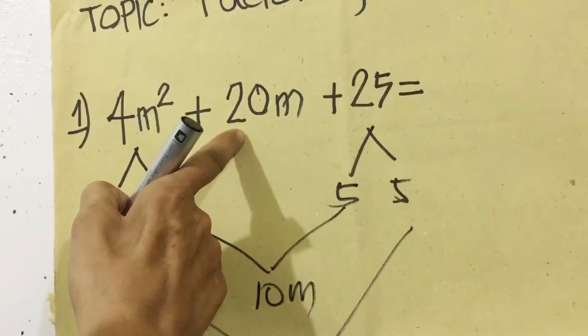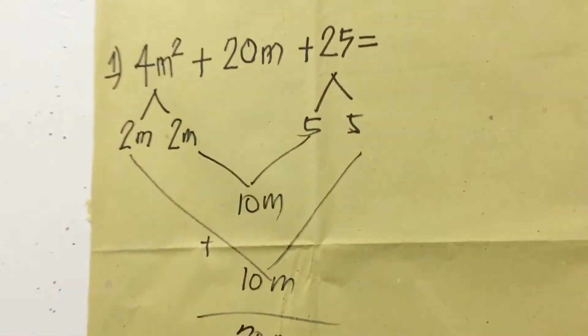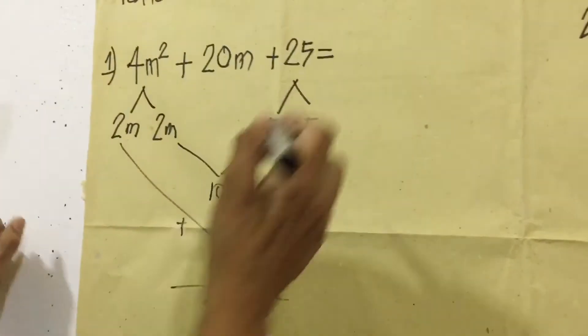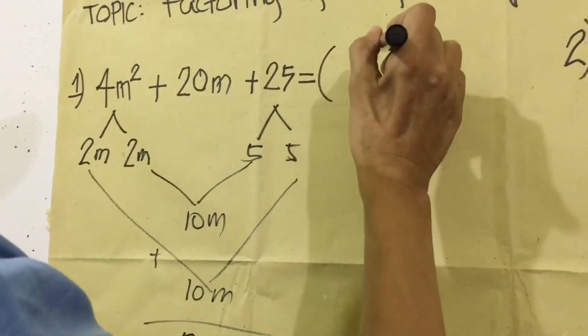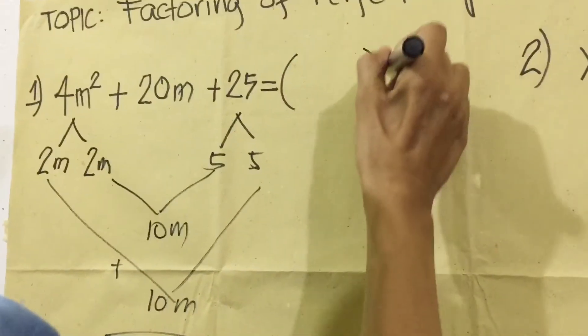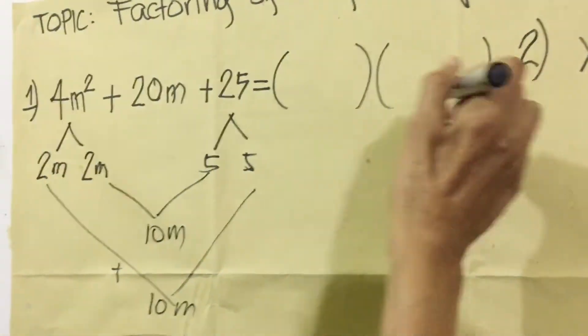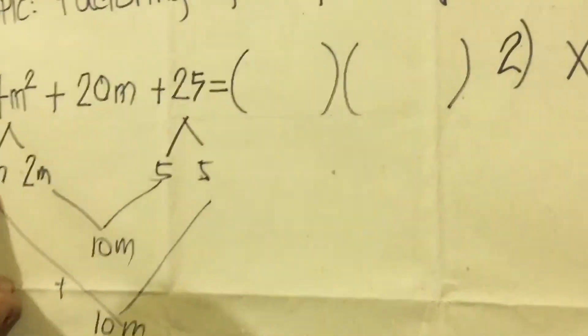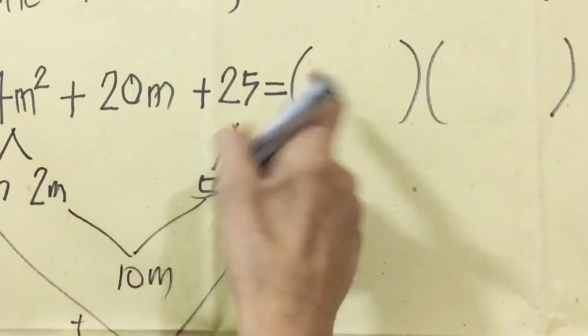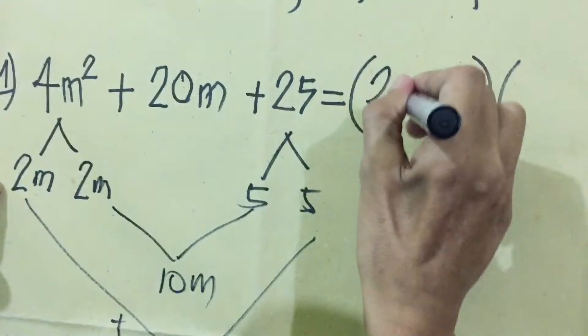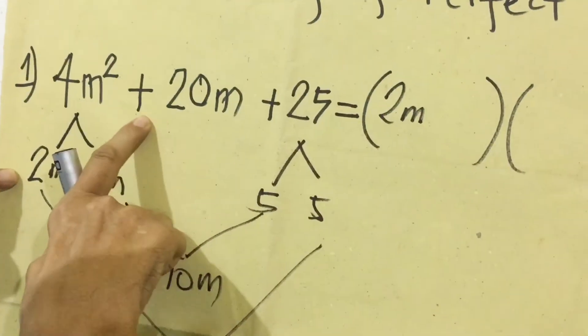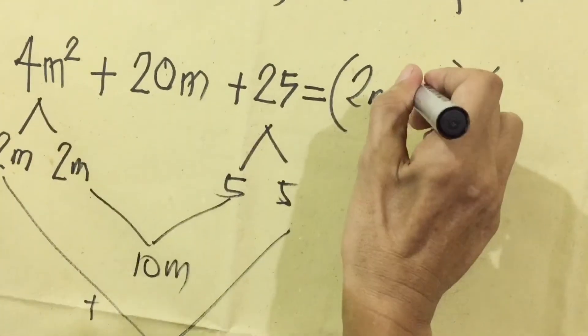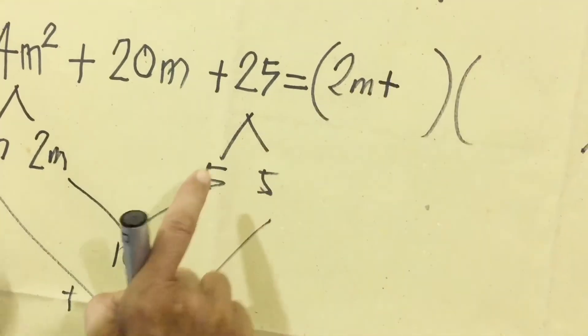For perfect square trinomials, we need two parentheses. We're going to write the first term here, 2m, and the sign of the middle term is positive.